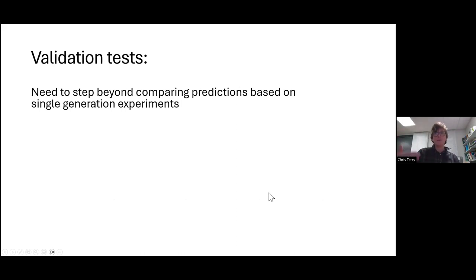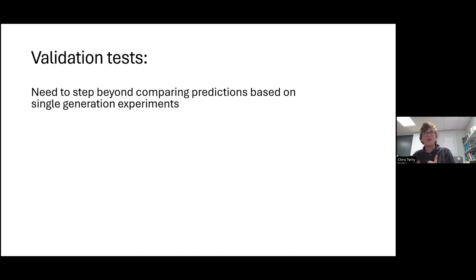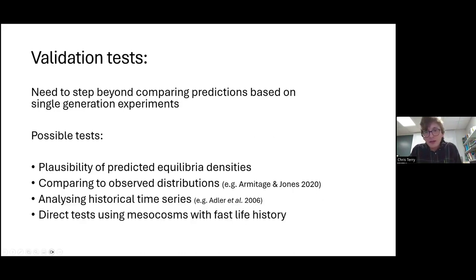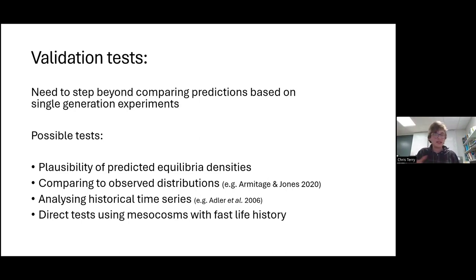I think there isn't really a substitute for actually just testing how much all of these problems actually matter, with experiments. To make this step beyond just comparing predictions, we need to make big validations. Hopefully eventually we'll get to a stage where we don't need to validate every time, because some cases will just be straight up impossible to validate. But where we can, we really should — because at the moment we might just be discussing better horoscopes of predictions, adding more detail and complication, but they might still not be on firm enough ground. Possible tests include plausibility tests — checking whether predicted equilibrium densities from these models make any sense — comparing to observed distributions across space, and working with historical time series.